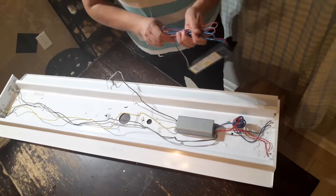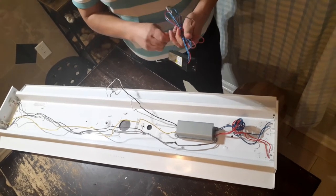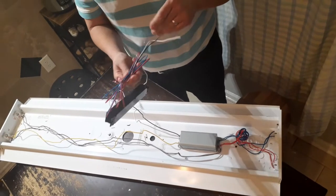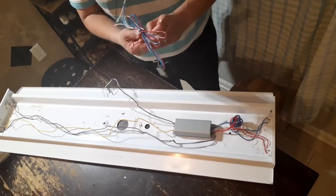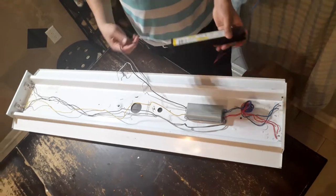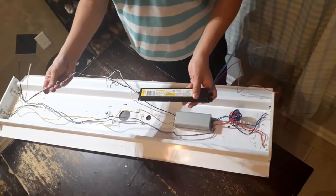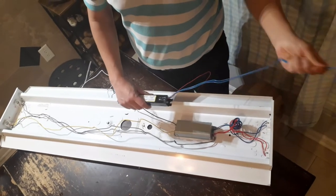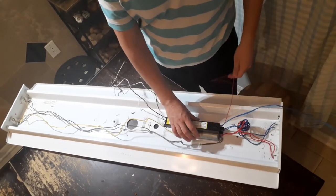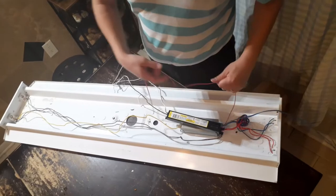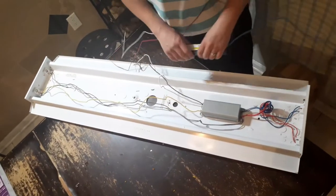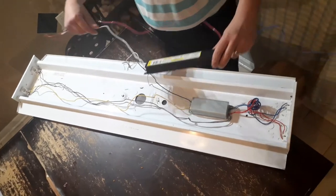So I'm going to take this ballast over here with the new ballast right here and similarly as it was shown on the diagram. The black and the white leading in from the house power, two blues going to one side, and then the red is going to be jumped to the opposite side. So I'm just going to take this ballast out and put in the new ballast.